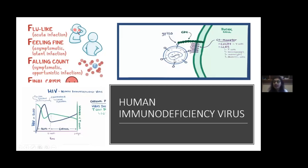This is the HIV virus. On its outer membrane, we can see there's something called the GP120 protein. What this does is it attaches to the CD4 molecules, which are present on T cells and also some sentinel cells like macrophages, monocytes, and dendritic cells. With the help of one GP120 protein, it attaches to the CD4 molecule which is present on the outer surface of the cell.